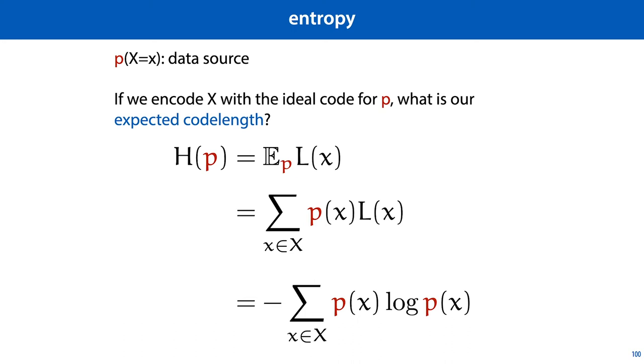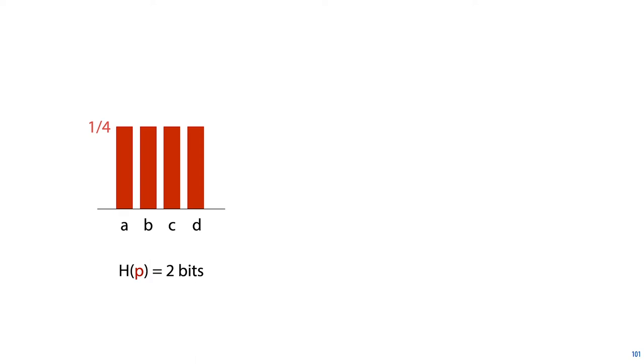And this function is very useful for expressing how much uncertainty there is in a probability distribution. Consider, for instance, a distribution on the outcomes a, b, c, and d. If we have a uniform distribution, then the best we can do is to associate each outcome with a 2-bit code word. This gives us exactly 4 code words, each the same length, so that our expected code length is 2 bits.